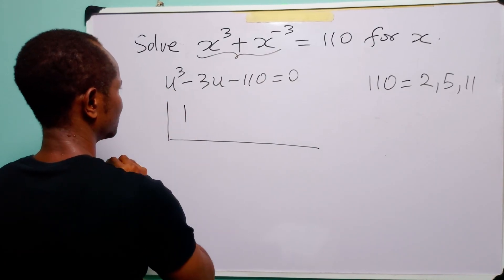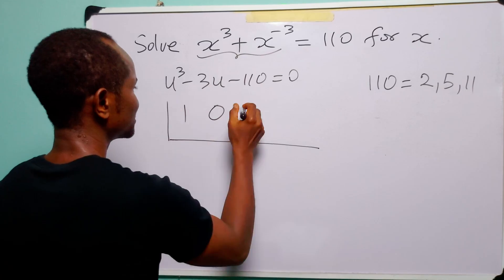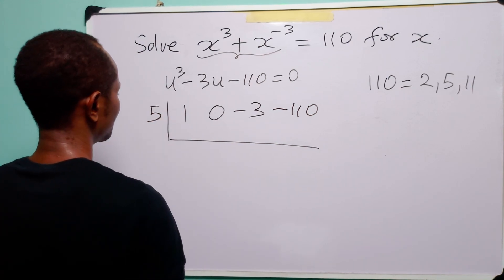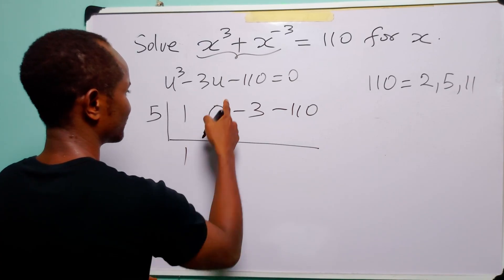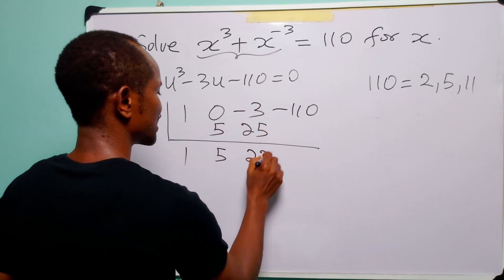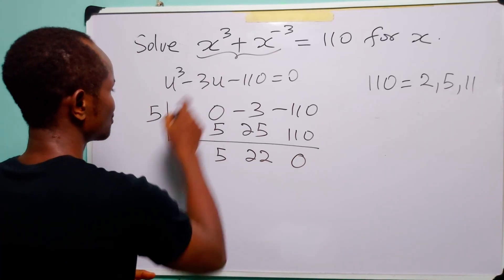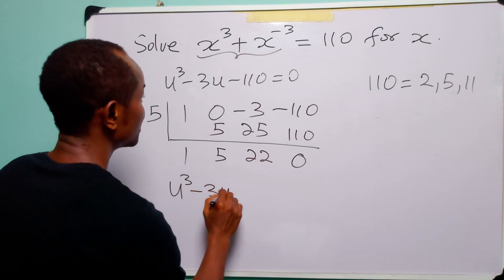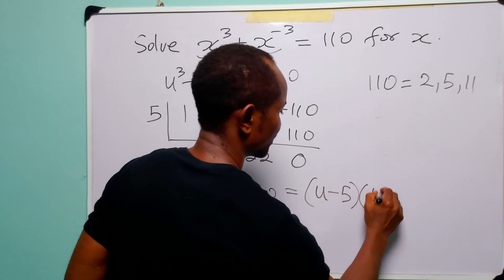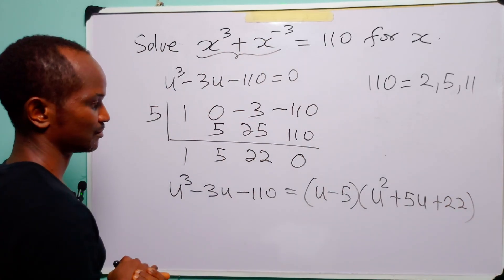For synthetic division: the coefficients are 1 (u³), 0 (u², absent), −3 (u), and −110 (constant), with root 5. Bringing down: 1; 5×1=5, 0+5=5; 5×5=25, −3+25=22; 5×22=110, −110+110=0. So u³ − 3u − 110 = (u − 5)(u² + 5u + 22).